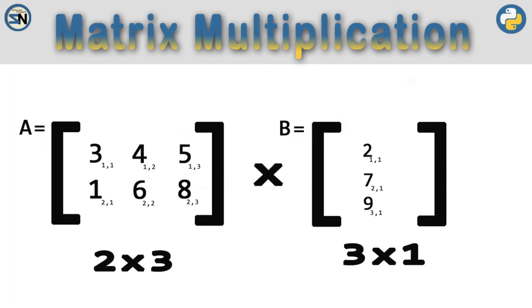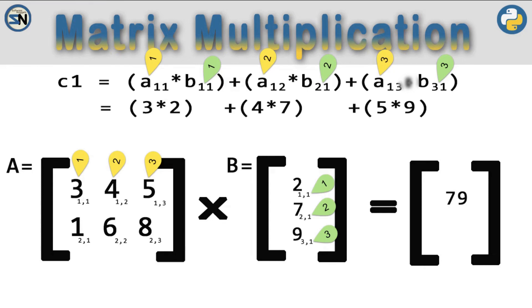Let's multiply two matrices. Let us solve C1. That is 3 times 2 plus 4 times 7 plus 5 times 9. That equals 79.